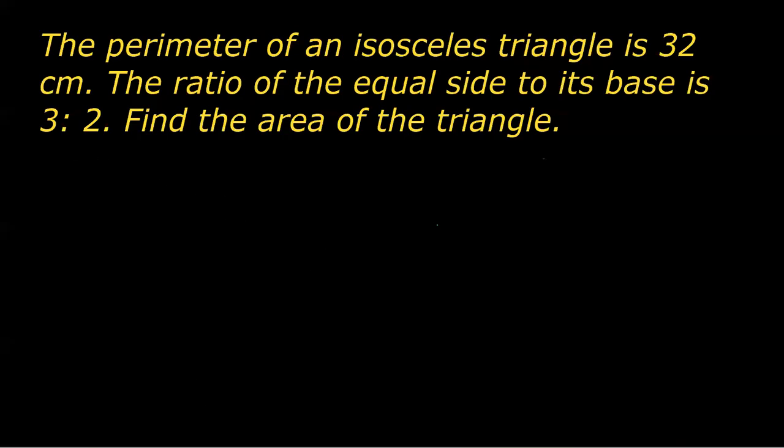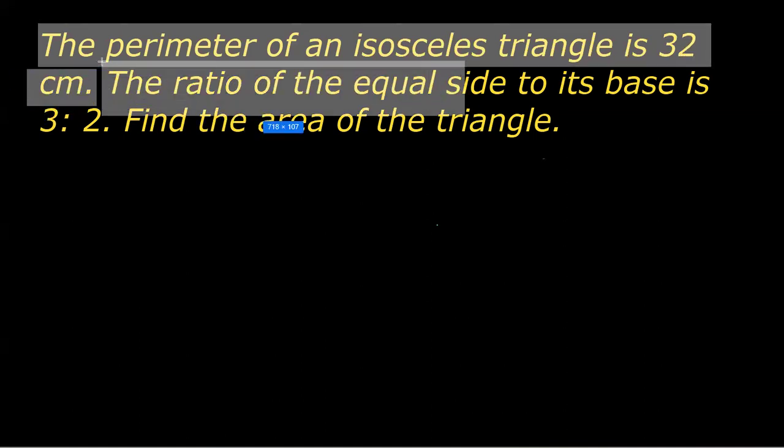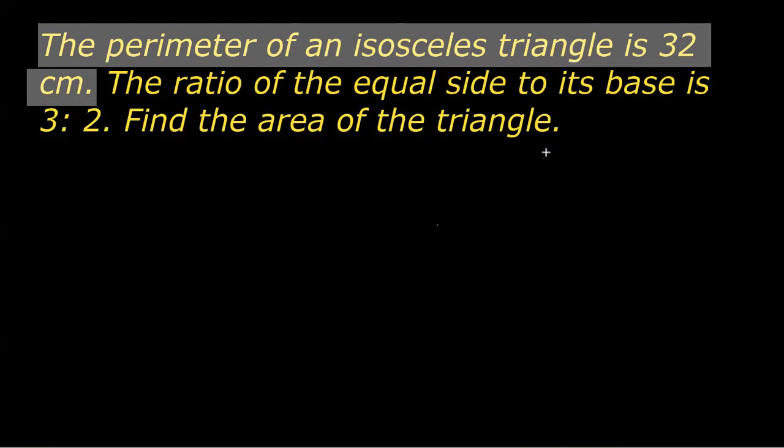In this video, I'm going to do one question based on the chapter Heron's formula. The question says that the perimeter of an isosceles triangle is 32 centimeter. The ratio of the equal side to that of the base is 3 is to 2. We have to find the area of this triangle.